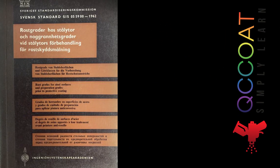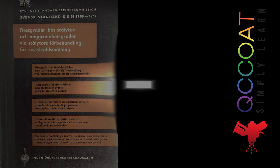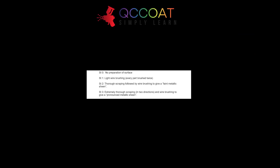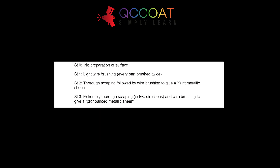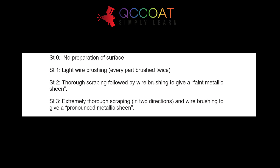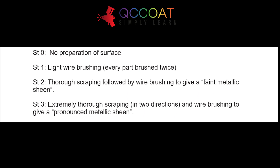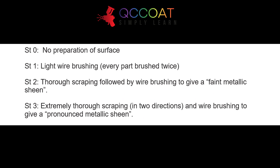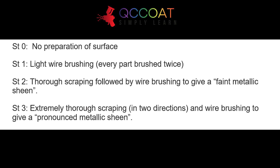The 1962 edition of SIS 055900 describes surfaces prepared by manual tool cleaning as: ST0, no preparation of surface; ST1, light wire brushing with every part brushed twice; ST2, thorough scraping followed by wire brushing to give a fine metallic shine; ST3, extremely thorough scraping in two directions and wire brushing to give a pronounced metallic shine.